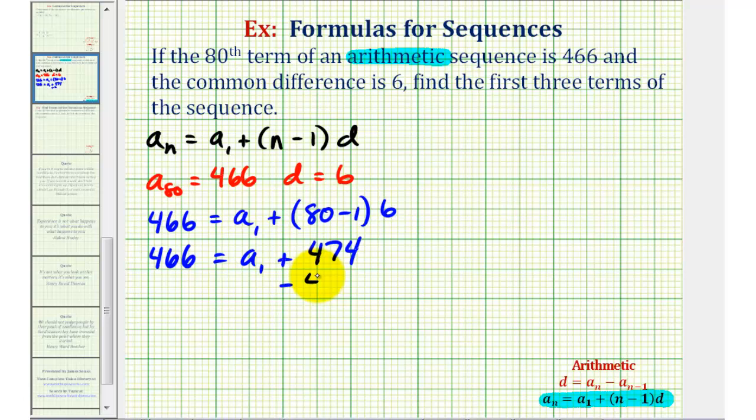We'll subtract 474 on both sides. So we have negative eight equals a sub one. So we know our first term is equal to negative eight, but we're asked to find the first three terms.